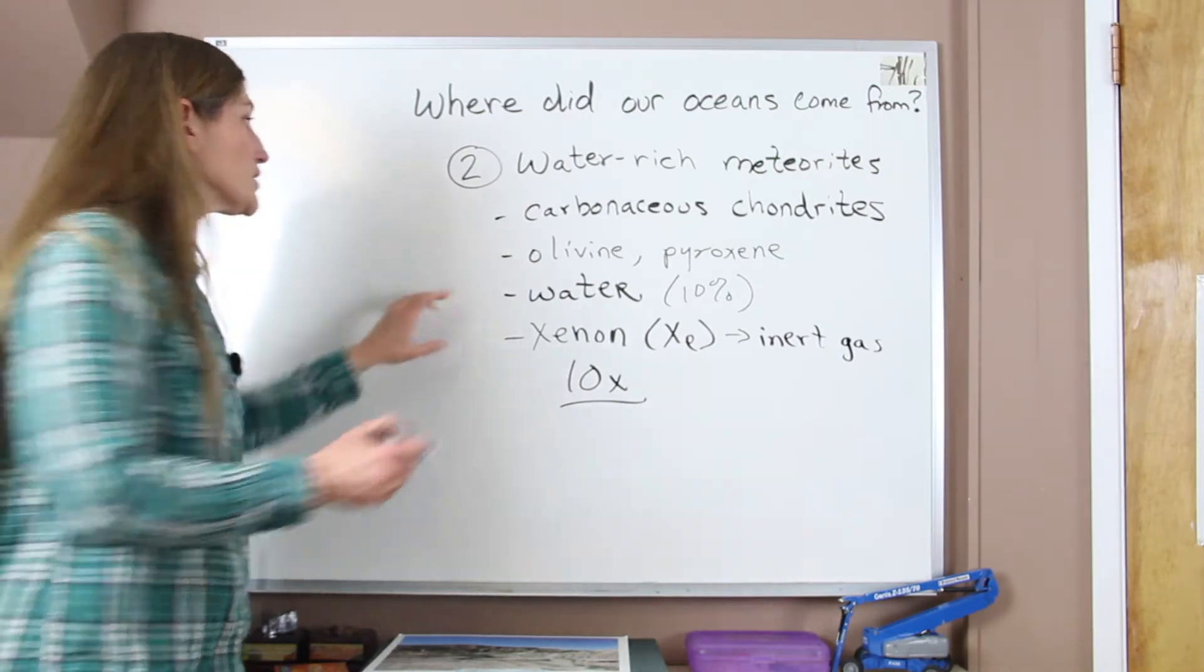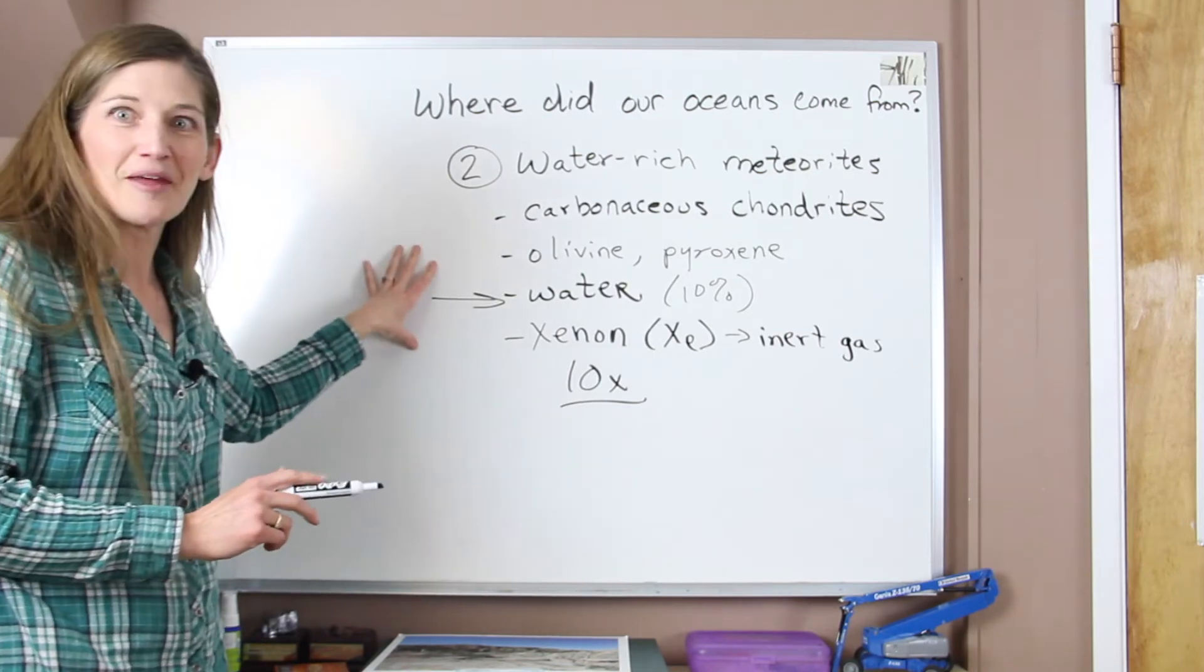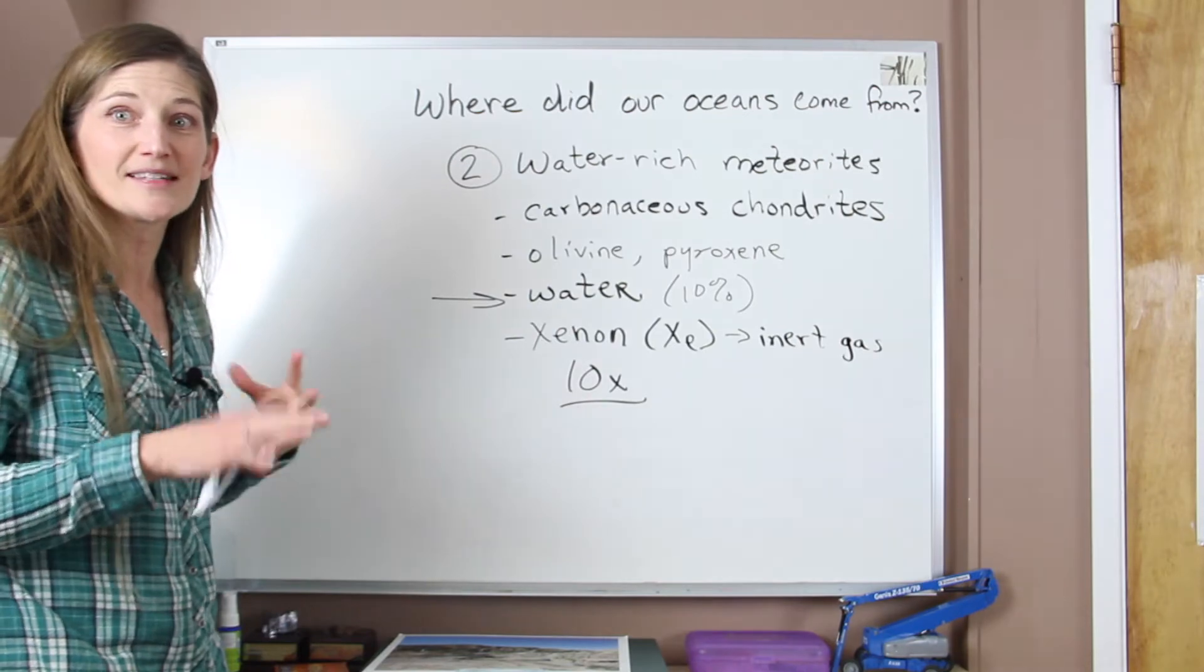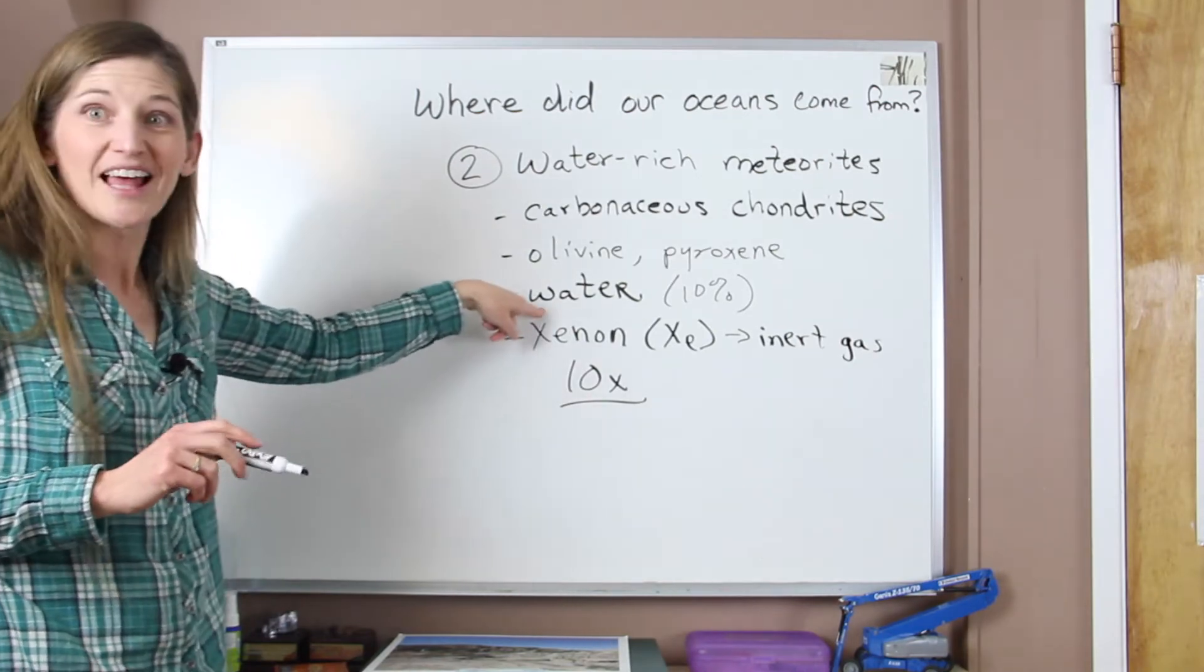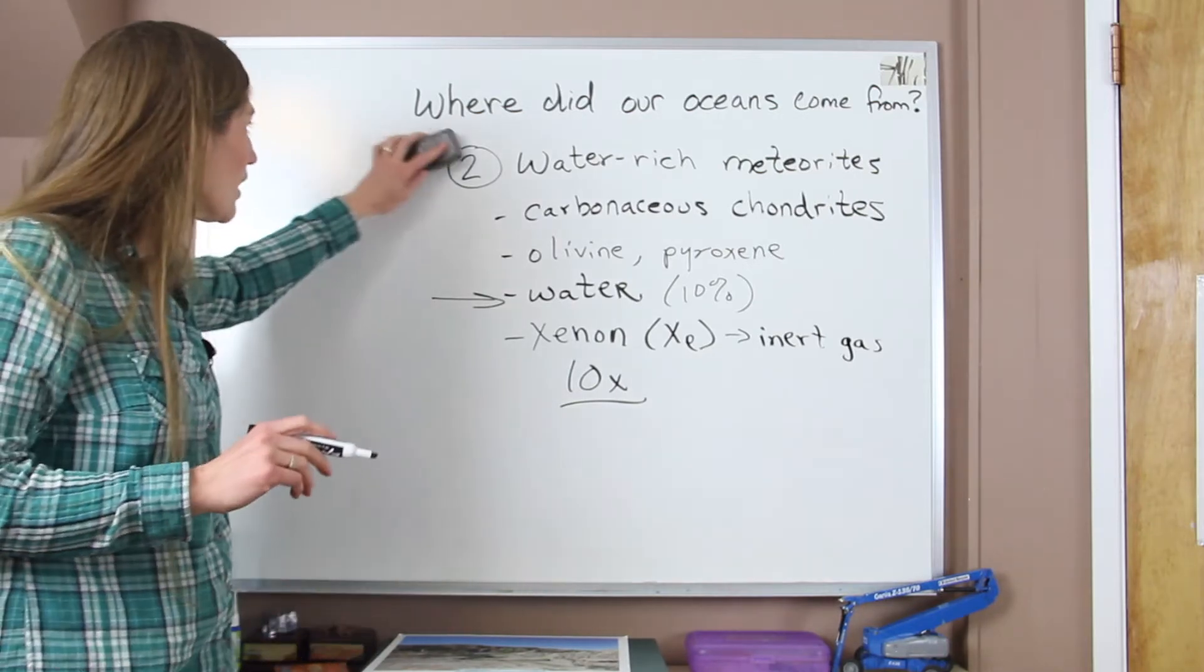But this is potentially a source for water because they are present in our solar system. We have found them on Mars and we have found them on Earth, so we do know that we've had some impacts, so they are a potential source of water. How much of a source, we don't know yet today.